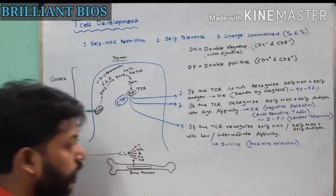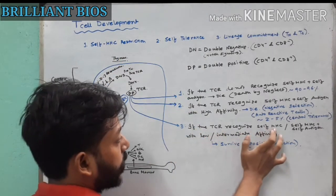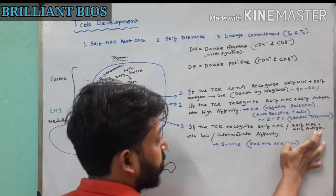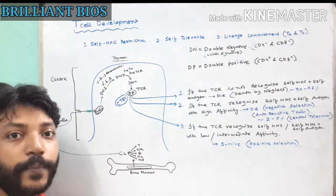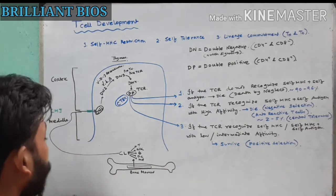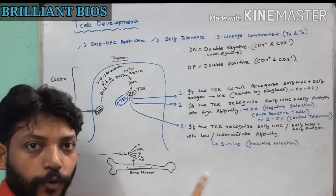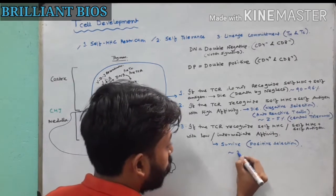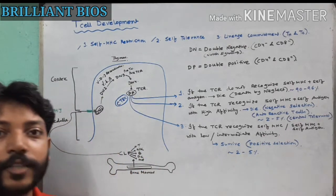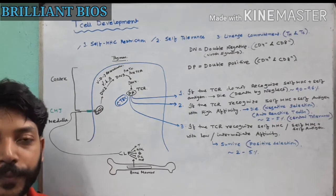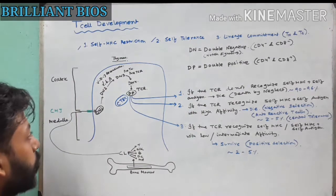Positively selected cells are maintaining the first two rules: self-MHC restriction — the TCR recognizes self-MHC — and self-tolerance — it recognizes self-antigen with low or intermediate affinity, meaning it tolerates its own antigen. Approximately 2 to 5 percent of double positive cells survive positive selection during the training procedure in the cortex.